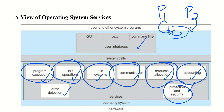Regarding system programs, a user can see system requirements and access system programs through system calls only. The structure is: user programs, system programs, hardware interface, and the operating system. Through system calls only can the user access the services of the operating system.